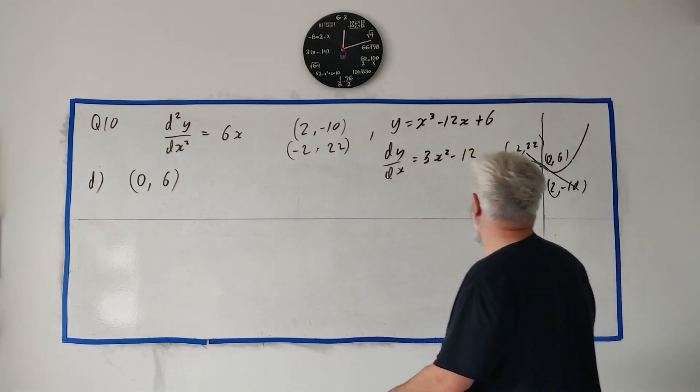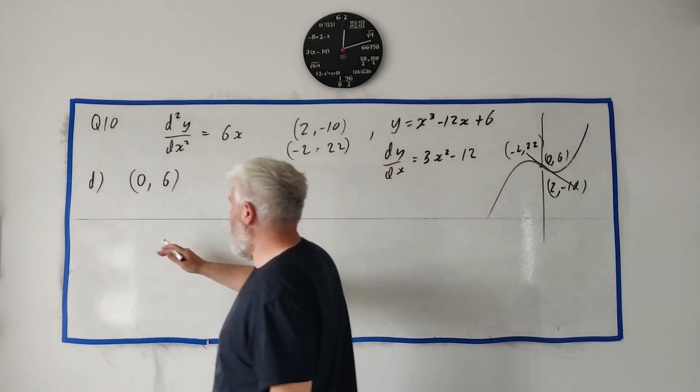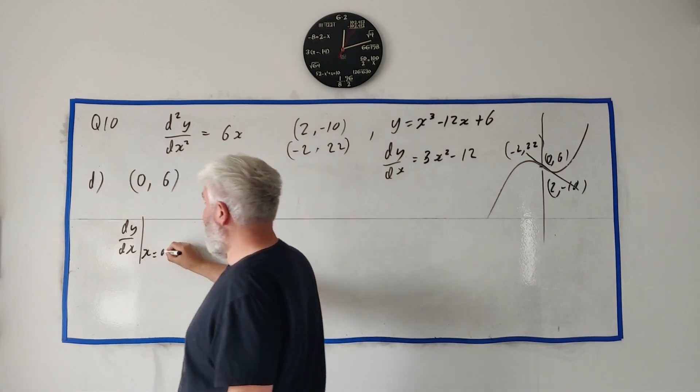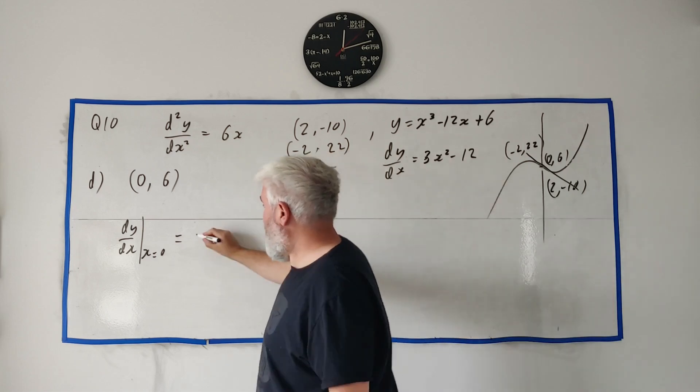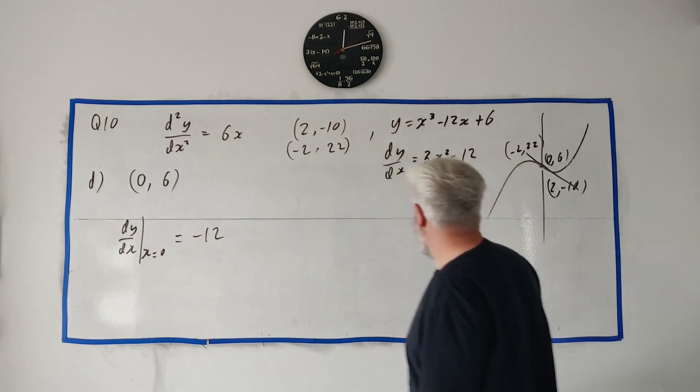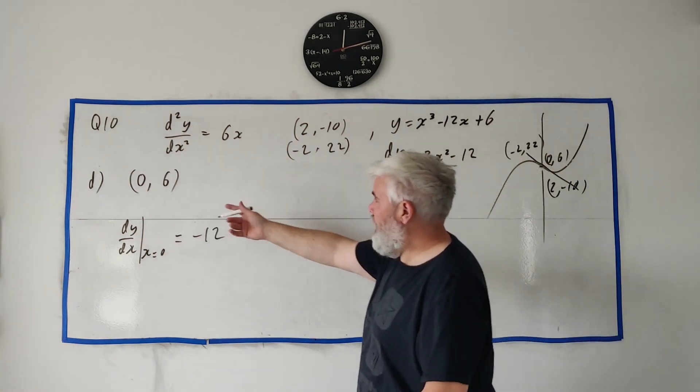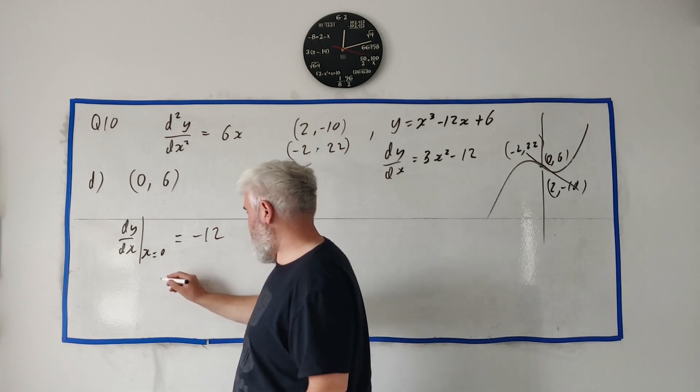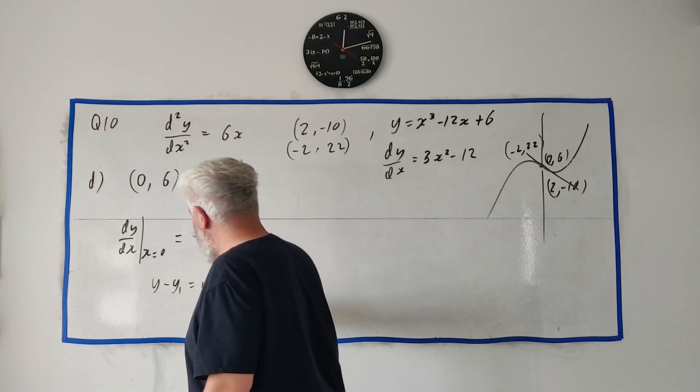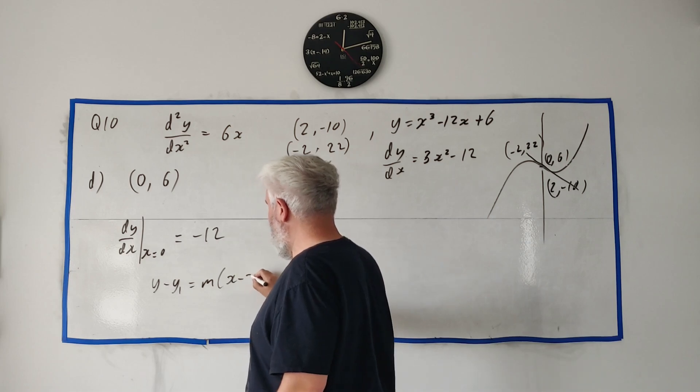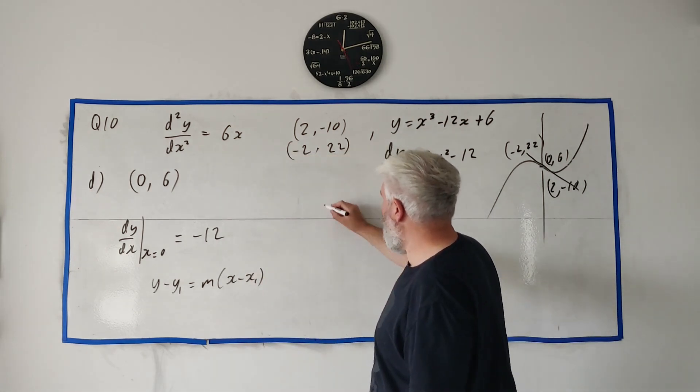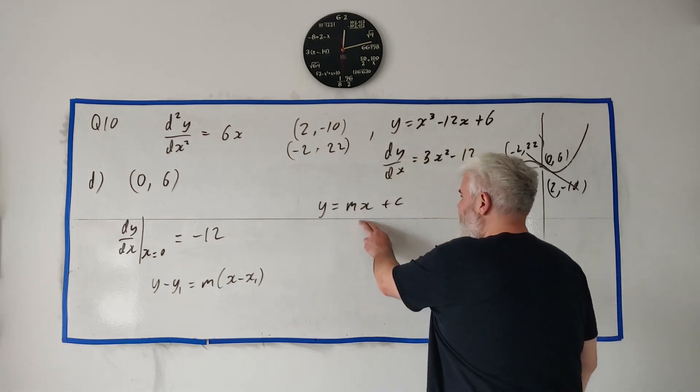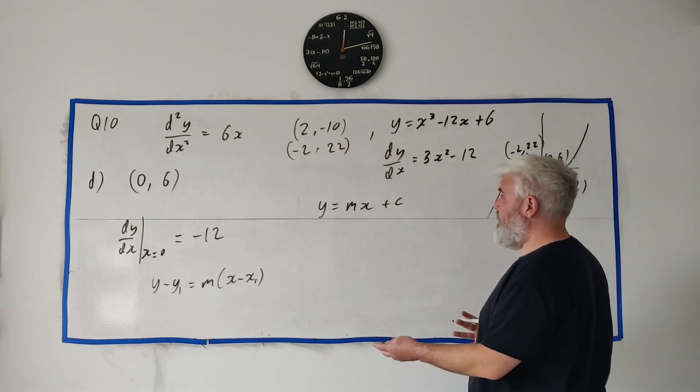So we need to know the slope of this. The dy/dx will tell us that. dy/dx at x equals 0 is equal to minus 12. So the slope is minus 12 here. And we have a point. You can use whatever you want. You can use the equation, what's it, y minus y1 is equal to mx minus x1.